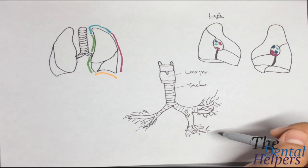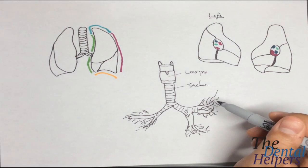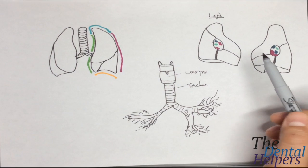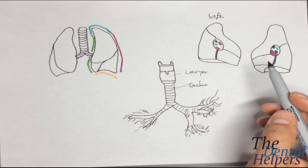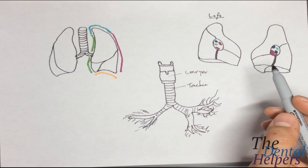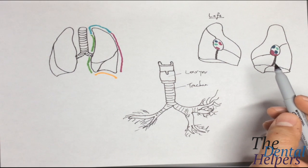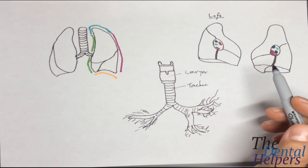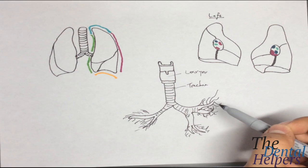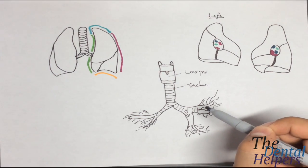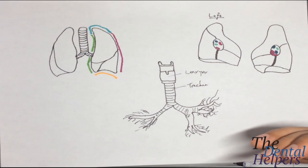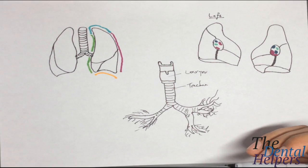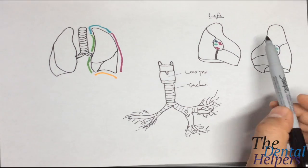The primary bronchi entering the right lung is larger in diameter and descends more vertically than the left. So if we were to look at the right lung, we're going to see that it's going to have a greater descension as well as a larger diameter.